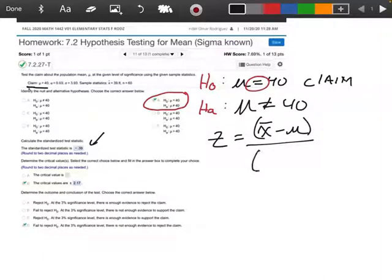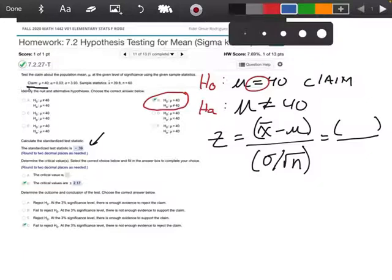So the way we find the standardized test statistic is we use this formula here. I'm putting this in parentheses because I'm going to use my calculator, and I want to make sure that when I do this, I do everything correctly. Okay, so now, let's see.